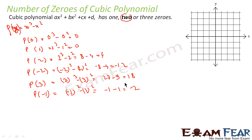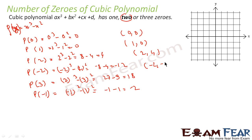Let us plot these points. The points are: (0, 0), (1, 0), (2, 4), (3, 18), and (-1, -2). Also (-2, -12) will be plotted. Let's set up the axes: x ranges from -3 to 3, and y ranges from about -8 to 8 and beyond.